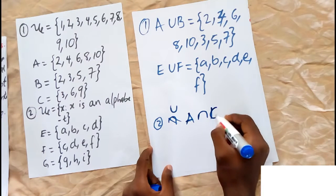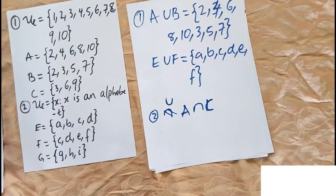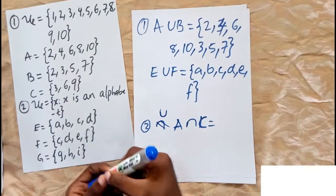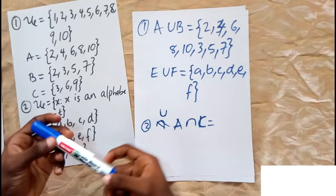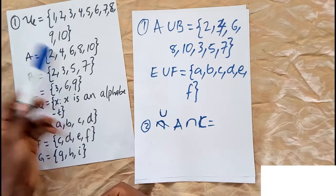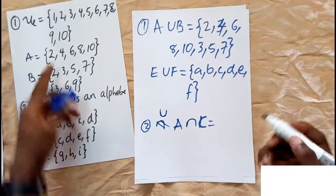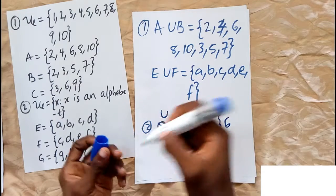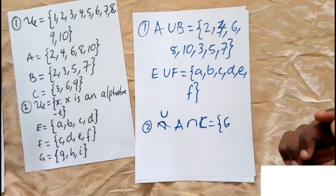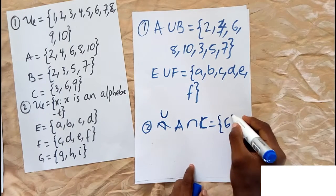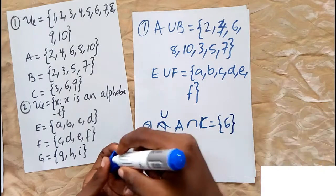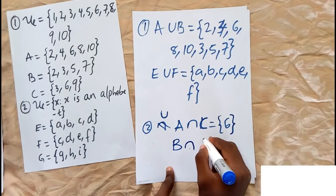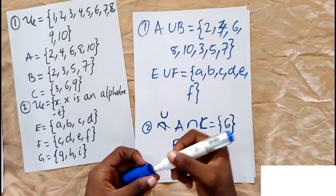Using A intersect C — we look for elements in both A and C. Checking A: 2 is not in C, 4 is not in C, but 6 is in both A and C. Then 10 is in A but not in C. So A intersection C gives us just {6}, a single-element set.